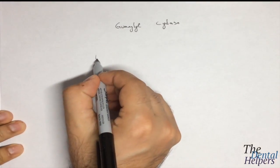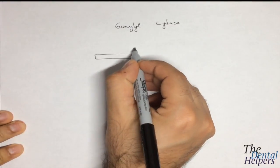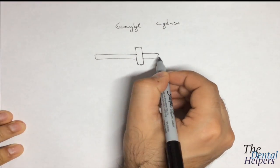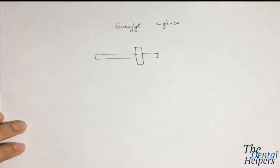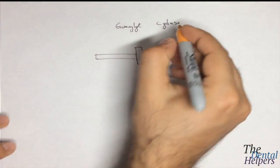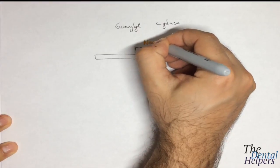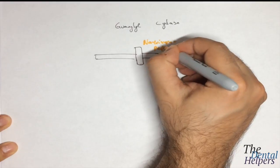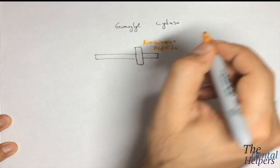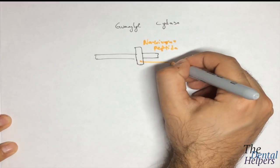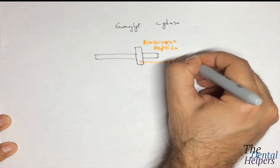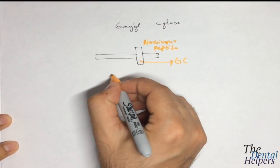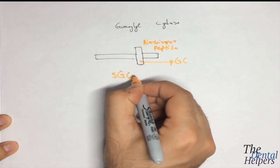So we have our membrane here, and this is one of the receptors. This receptor right here is for the natriuretic peptides, and it's known as the particulate guanyl cyclase route. We also have the soluble guanyl cyclase route as well.